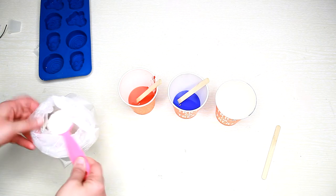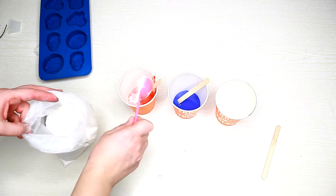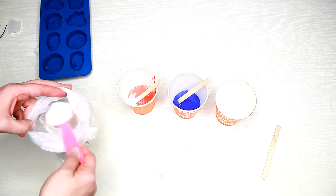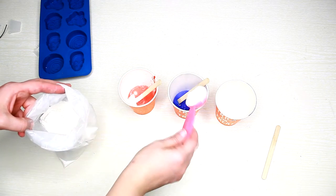Now you just need to add your plaster. At first I added four tablespoons of plaster in each cup.